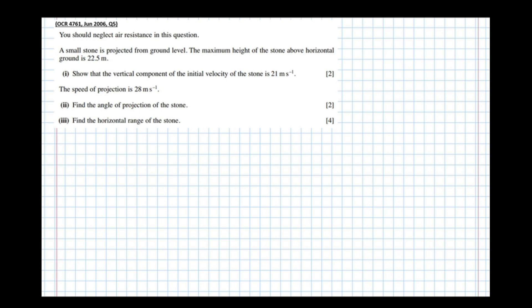The question says you shouldn't neglect air resistance in this question. So a small stone is projected from ground level. Let's try and get this into a diagram just to make sure that we understand what's going on. So projected from ground level, thrown upwards, then it'll come back down again.